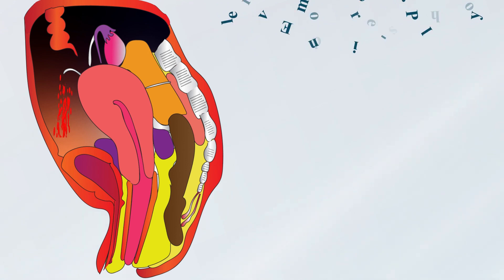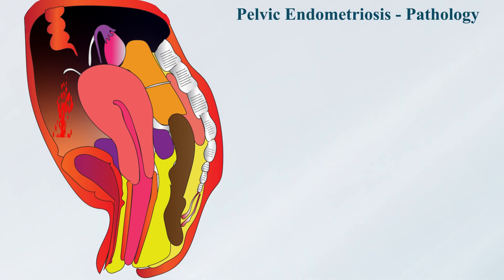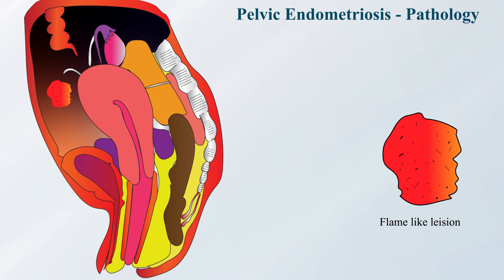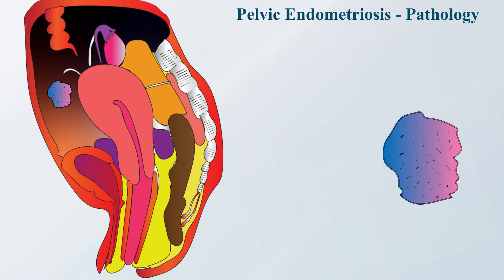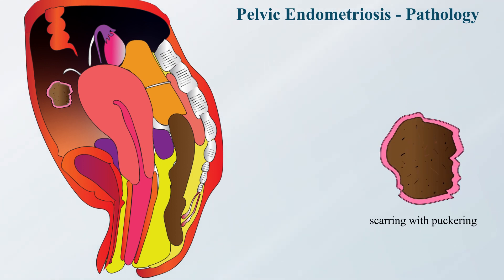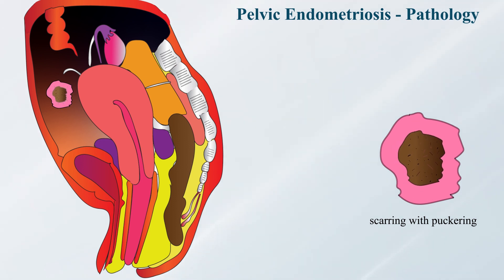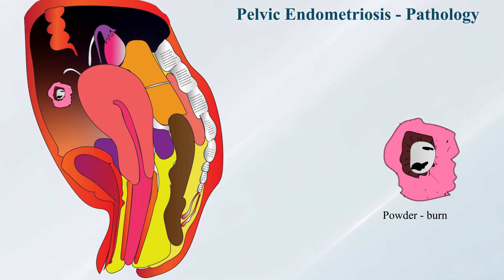Each menstrual cycle, blood from the bleeding sites of ectopic endometrium gets trapped and undergoes inflammation. In pelvic endometriosis, fresh hemorrhage is seen as a red vesicle with hemorrhagic fluid appearing as a flame-like lesion. This flame-like lesion later becomes dark red, blue, then black. Later, scarring occurs giving a puckered appearance, and all lesions are seen as powder-burn spots.